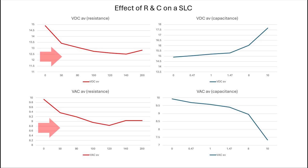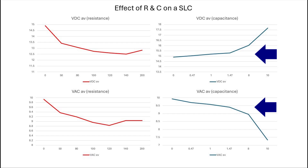The left side shows the effect of resistance with the red lines. If you know the baseline voltages, you'll see that as resistance increases, the voltage decreases following Ohm's law. The right side has the blue lines and shows the effect of capacitance on the circuit. As capacitance increases, the measured DC voltage will increase because of the smoothing effect on the waveform, and capacitance will have the opposite effect on the AC voltage, causing it to lower.